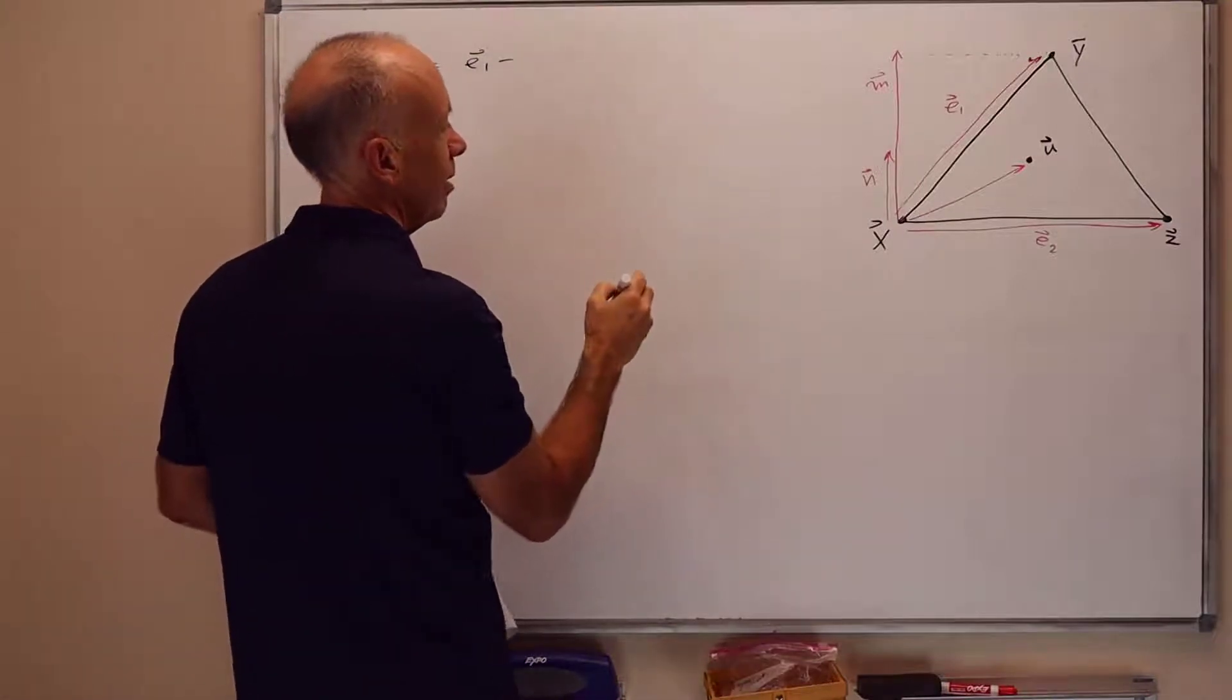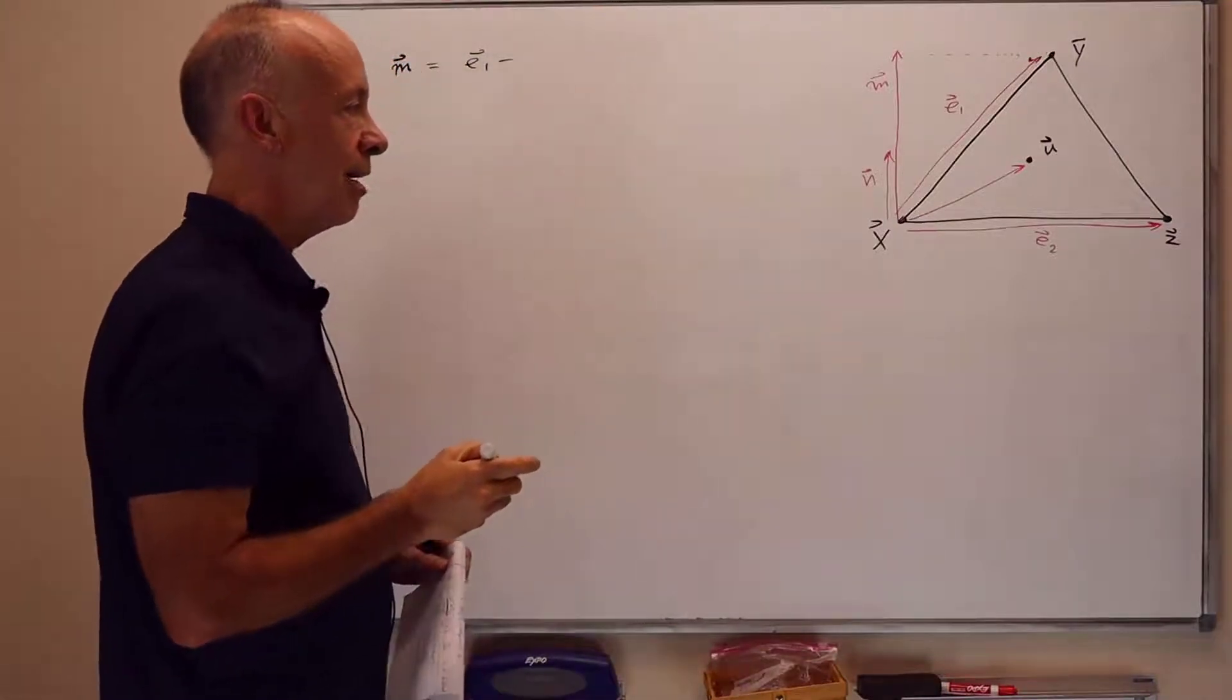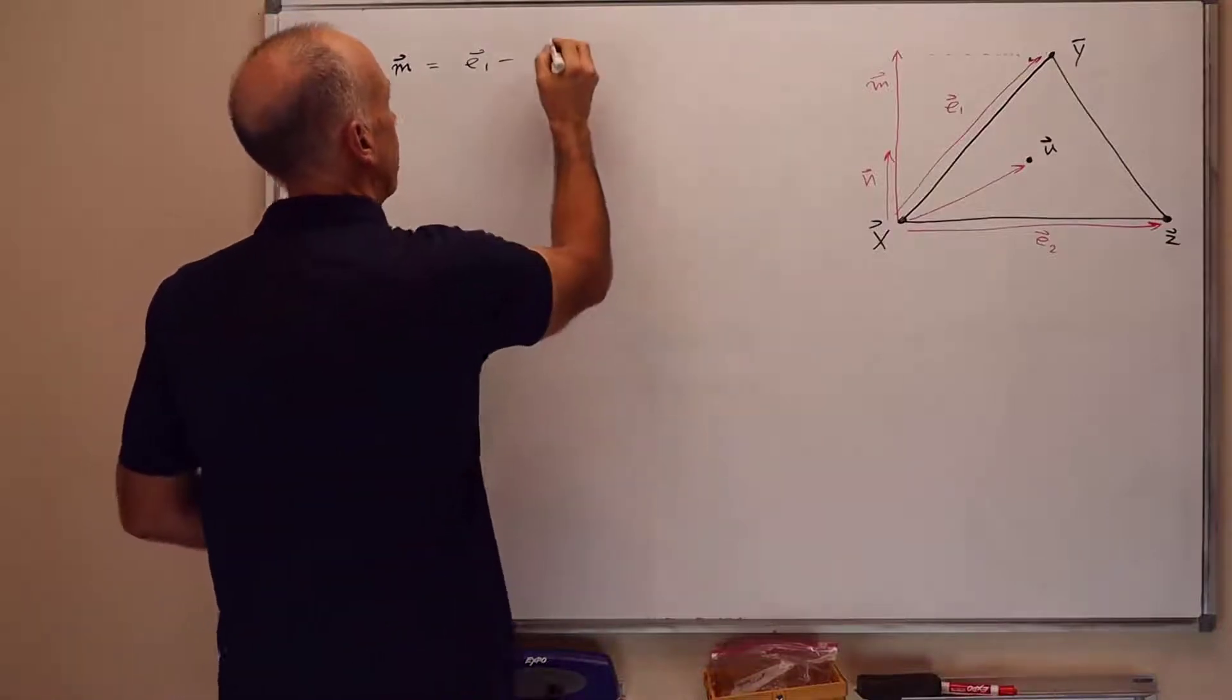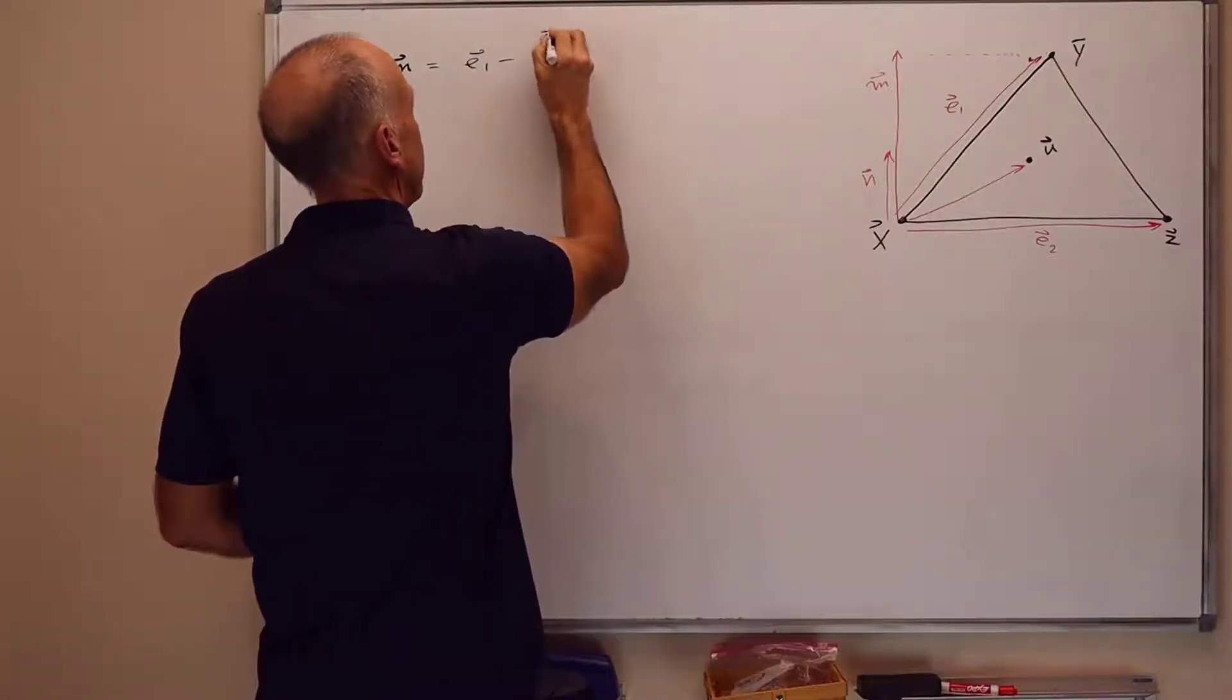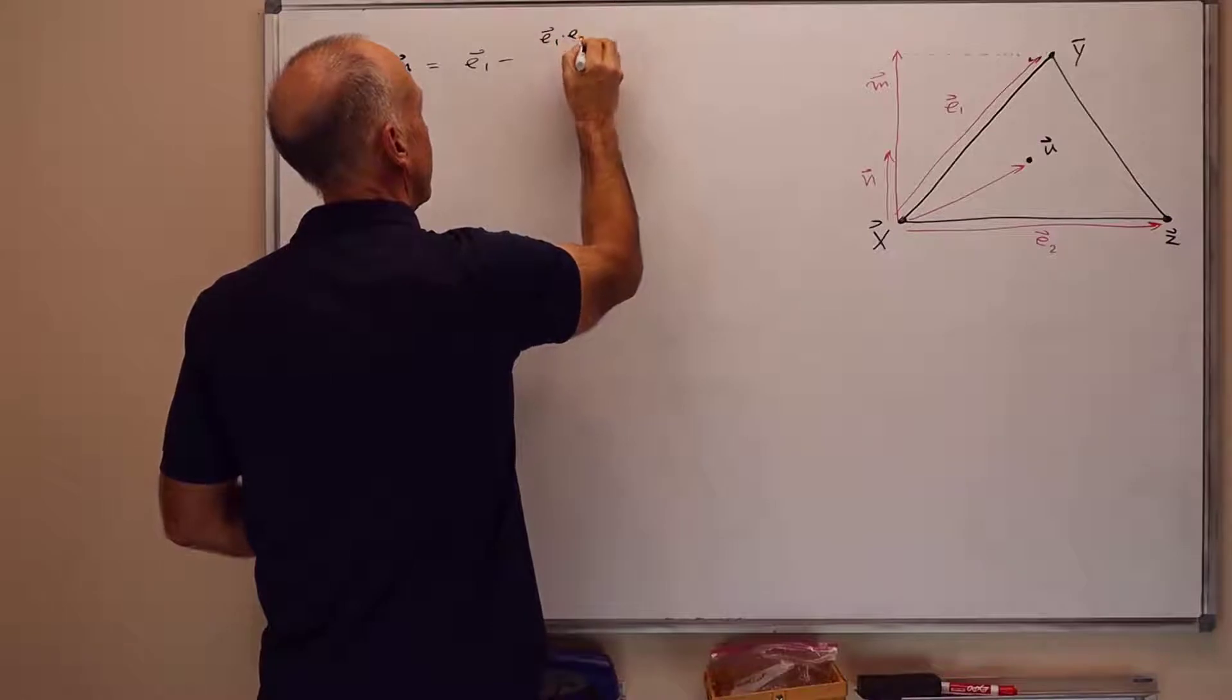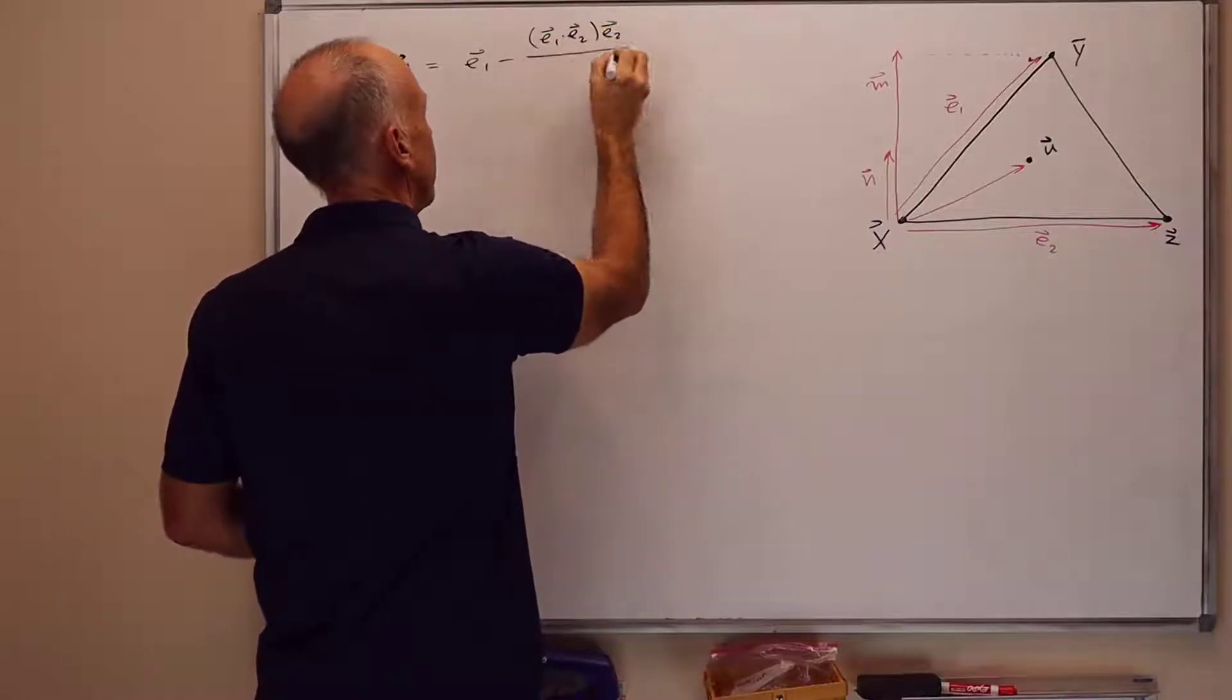If e2 were a unit vector it would just be e1 dot e2 times e2. But e2 may not be a unit vector, so now it's e1 dot e2 times e2 over the norm of e2 squared.